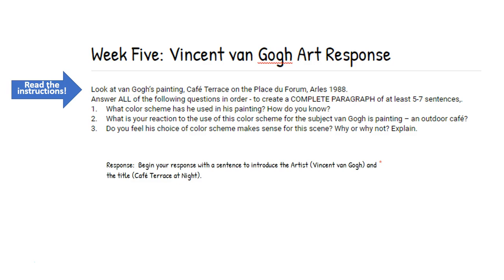Question one: what color scheme has he used in his painting, and how do you know? Question two: what is your reaction to the use of this color scheme for the subject — van Gogh is painting an outdoor café. Question three: do you feel his choice of color scheme makes sense for this scene, why or why not, and explain. There was also an added note below the artwork that said to begin your response with a sentence to introduce the artist Vincent van Gogh and the title Café Terrace at Night.